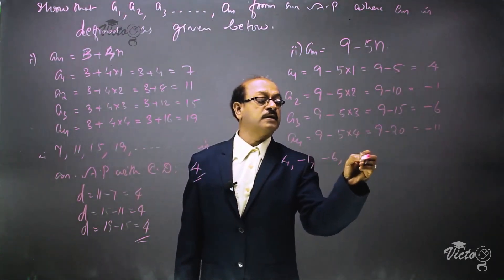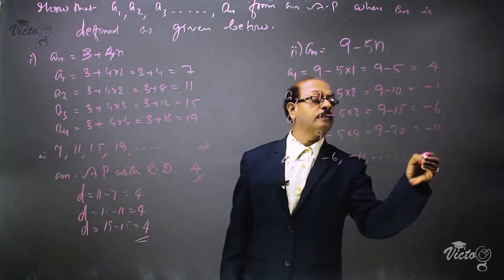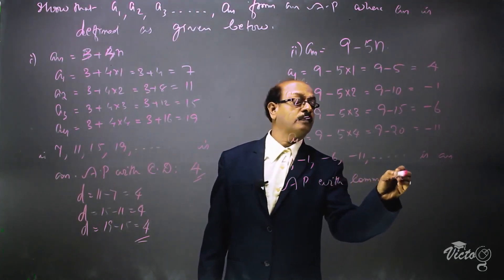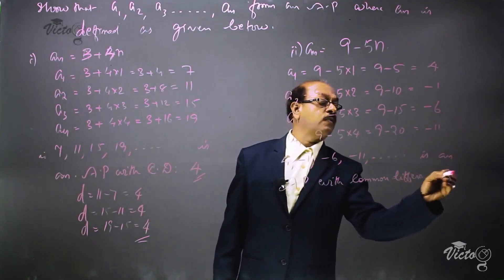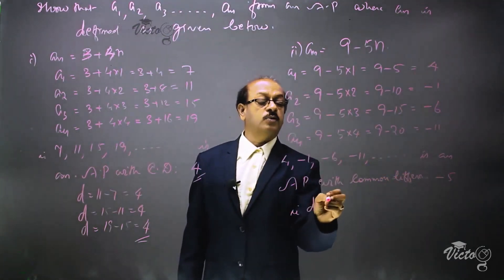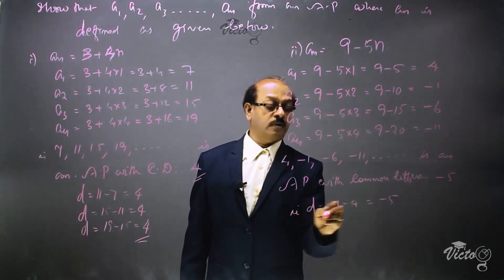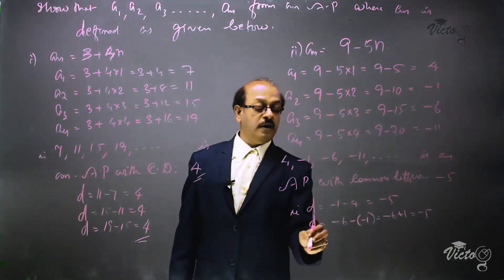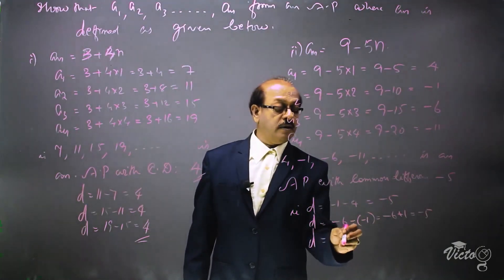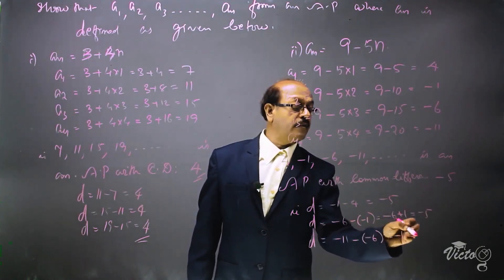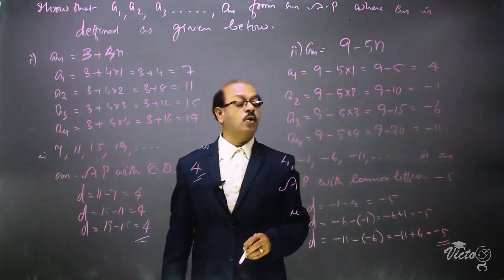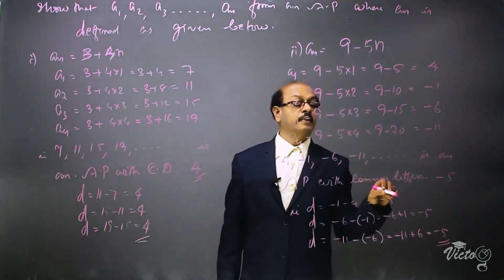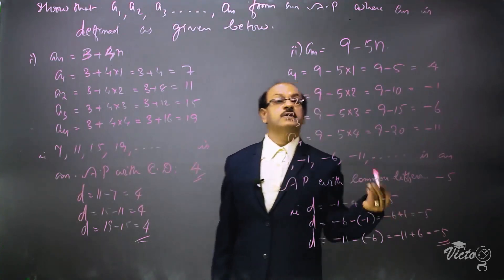The terms a1, a2, a3, a4, etc. are 4, -1, -6, -11, etc., which is an AP with common difference -5. We can verify: d = -1 - 4 = -5; d = -6 - (-1) = -6 + 1 = -5; d = -11 - (-6) = -11 + 6 = -5. So the first AP has common difference 4 and the second AP has common difference -5.